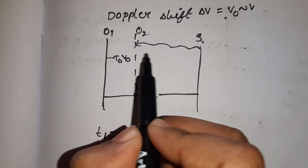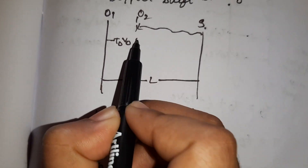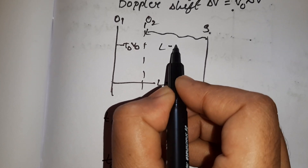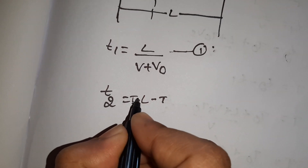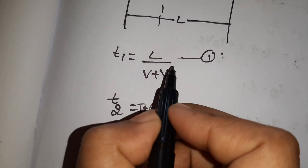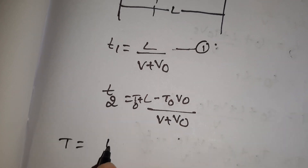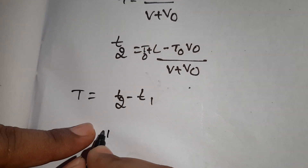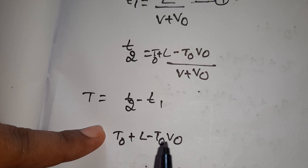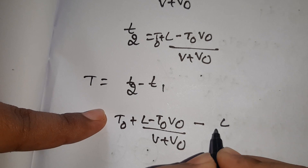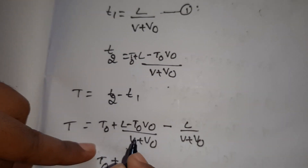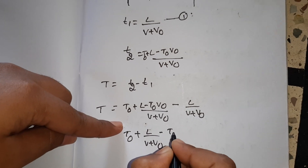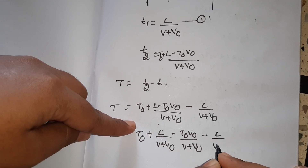The distance is equal to L minus T0 V0. So the distance L minus T0 V0 divided by relative velocity V plus V0 gives t2. So T is equal to the time difference T2 minus T1: T2 equals T0 plus L minus T0 V0 by V plus V0, minus T1 which is L by V plus V0.